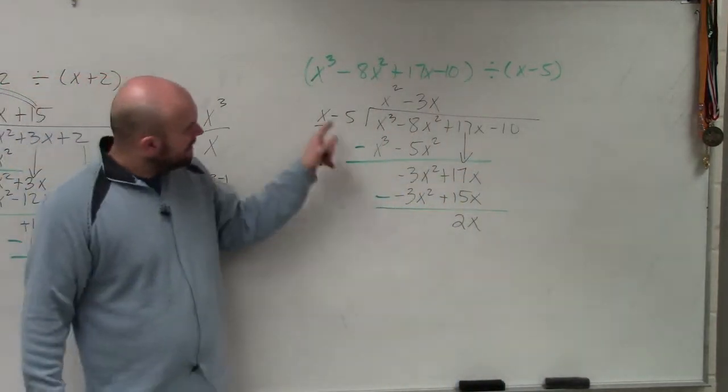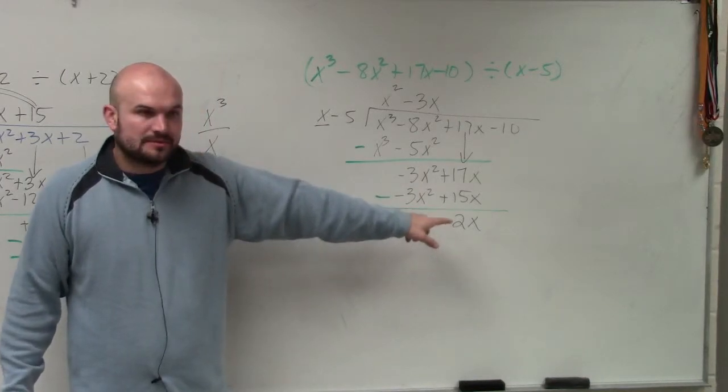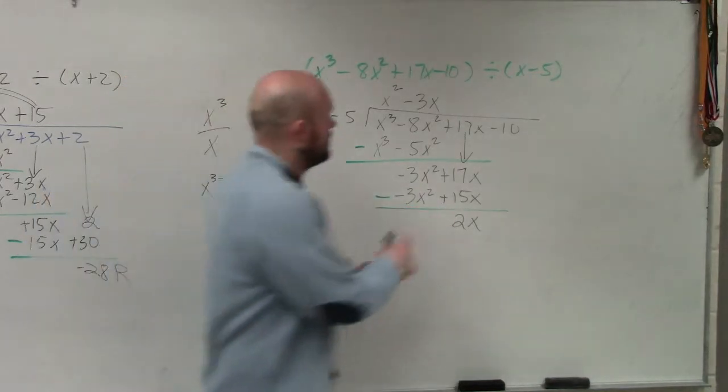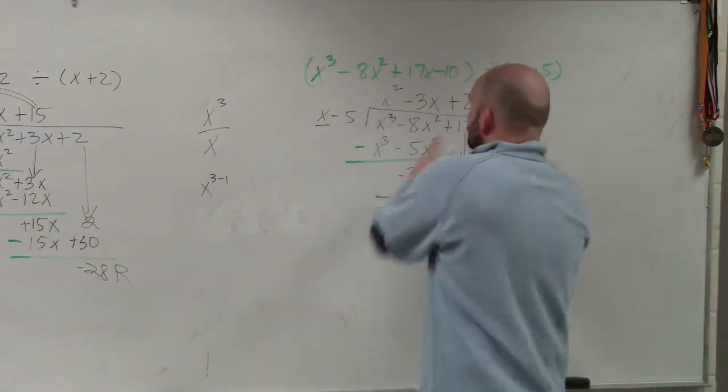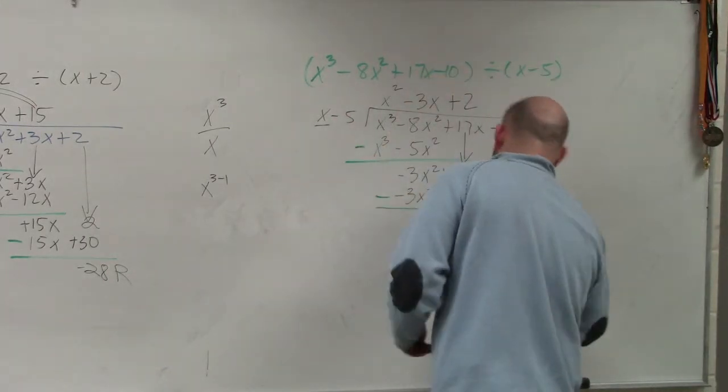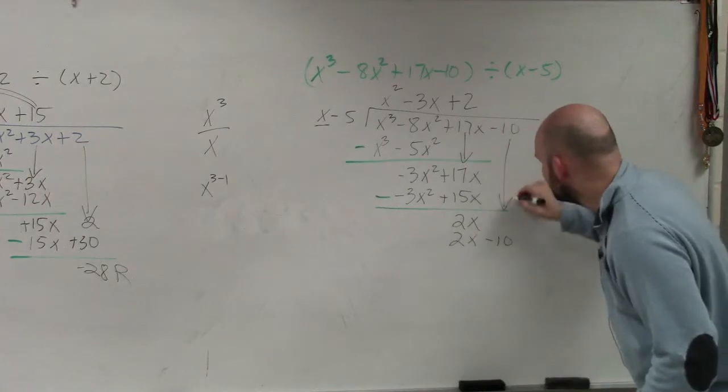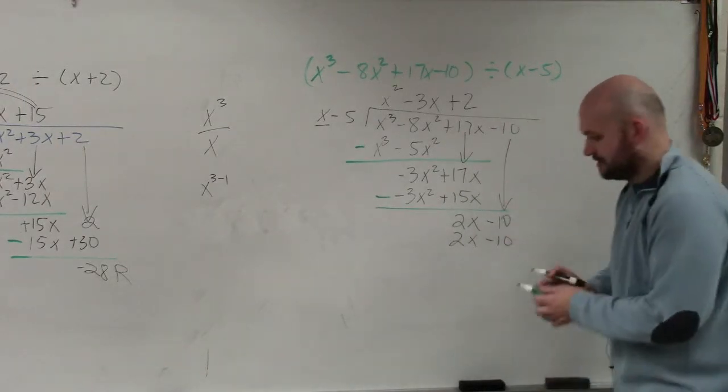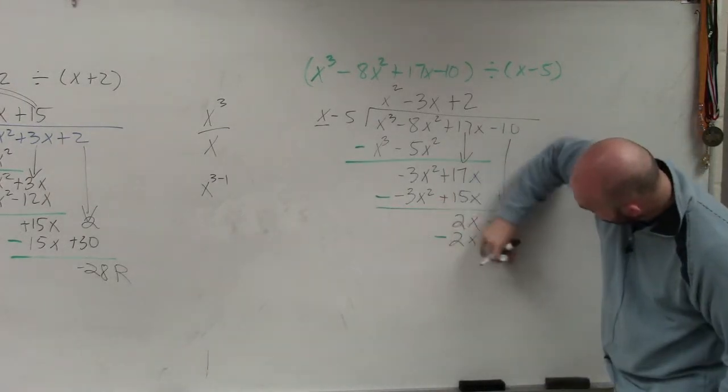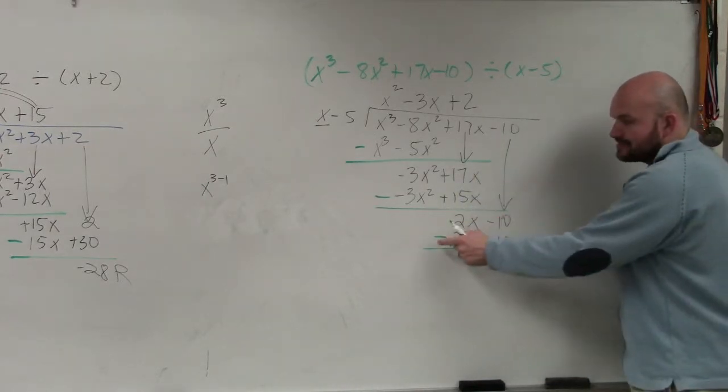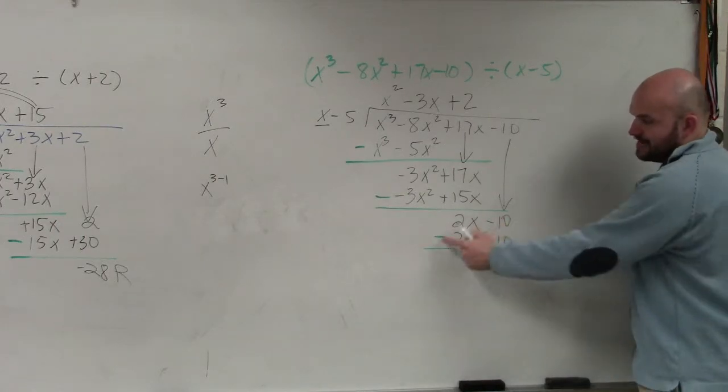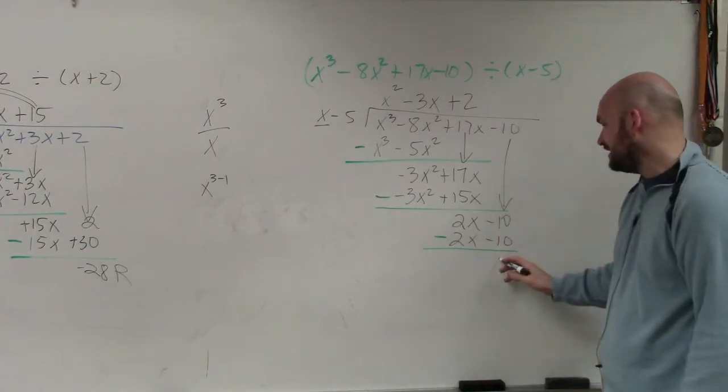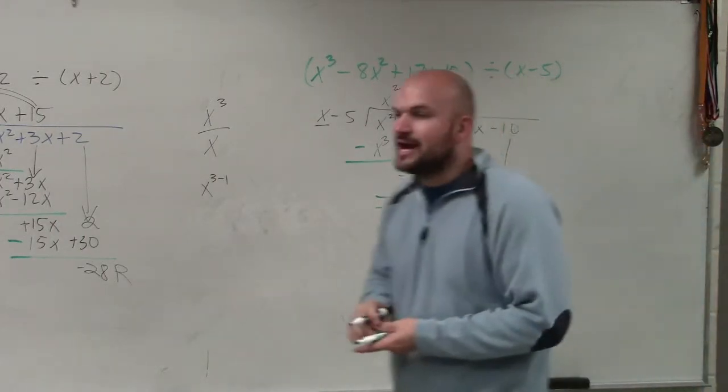Now, x divides into 2x how many times? 2. 2 times x is 2x. 2 times negative 5 is negative 10. Now, we bring down the last one, the last negative 10. And again, we subtract our rows. 2x minus 2x is 0x. Negative 10 minus a negative 10 is 0. So therefore, we don't have a remainder.